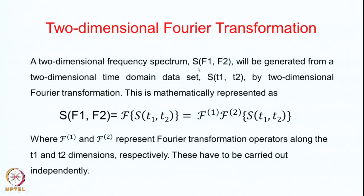A two-dimensional frequency spectrum, represented by frequencies F1 and F2, is generated from a two-dimensional time domain data set S(T1, T2) by two-dimensional Fourier transformation. Mathematically, S(F1, F2) equals the Fourier transform of the two-dimensional data body S(T1, T2). F1 and F2 represent Fourier transformations along the T1 and T2 dimensions respectively, and these must be carried out independently.